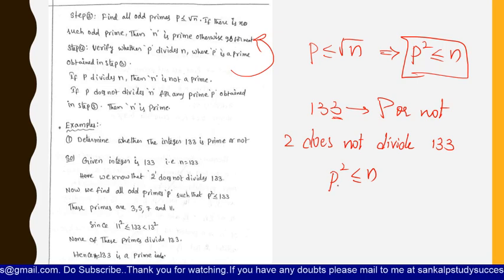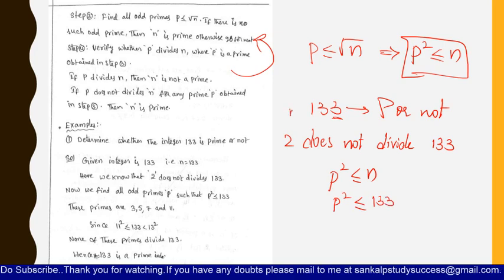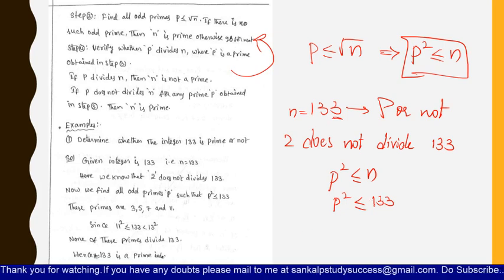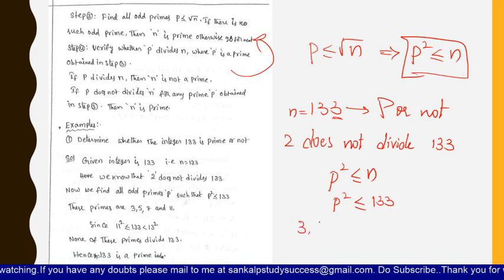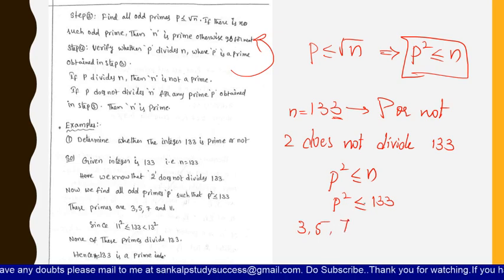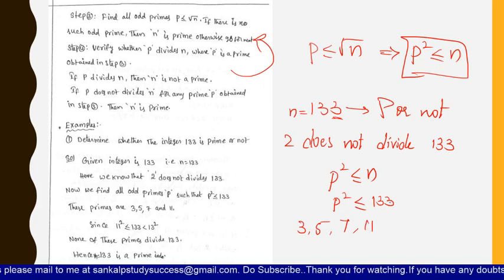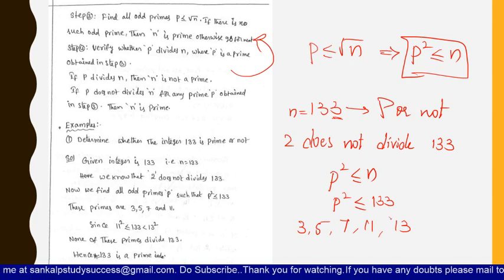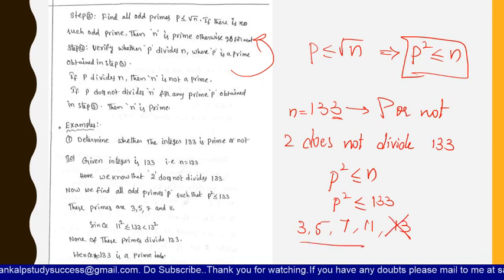We need to find all odd primes p where p squared is less than or equal to 133. We have: 3 squared is 9, 5 squared is 25, 7 squared is 49, and 11 squared is 121 — all less than or equal to 133. The next prime is 13: 13 squared is 169, which is greater than 133, so we do not consider 13. Therefore the odd primes to check are 3, 5, 7, and 11.